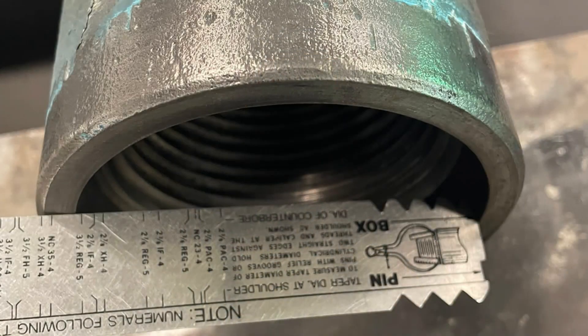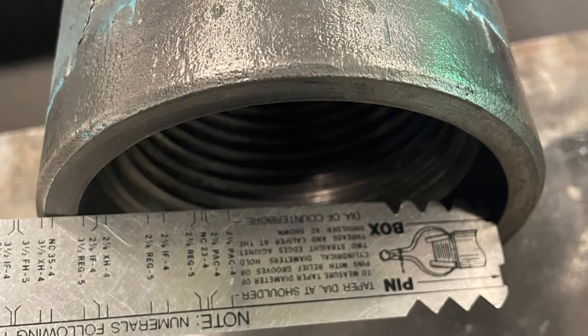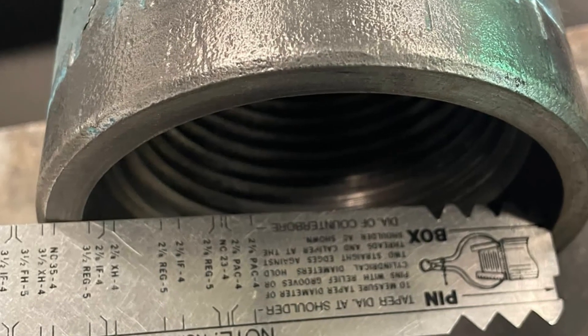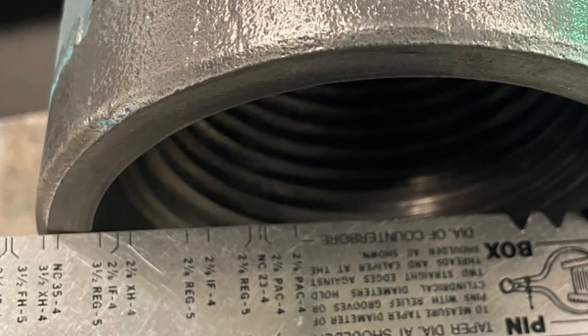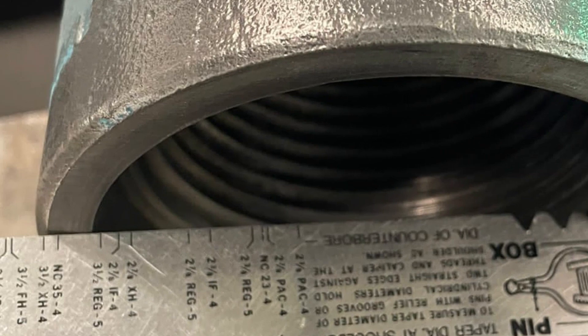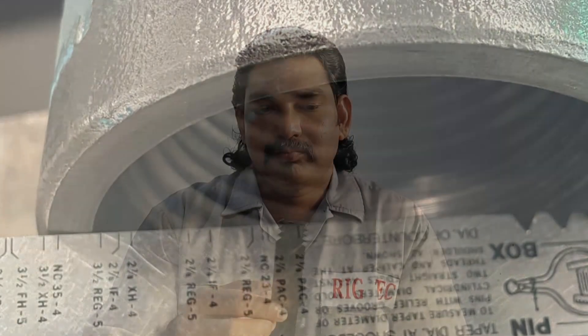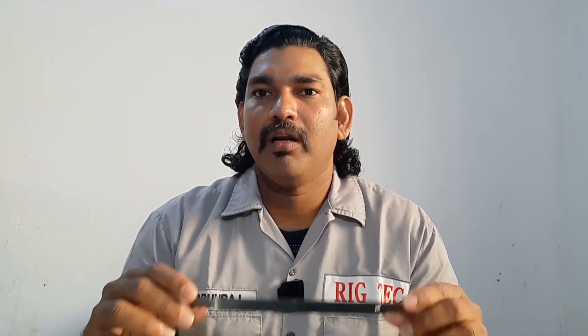Approximate connections are identified on the maximum counterpore diameter. If there is any ID bevel or internal chamfer on the counterpore, we have to measure while excluding the internal ID bevel or chamfer.